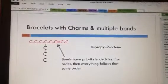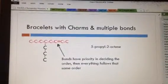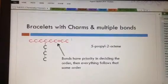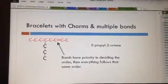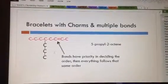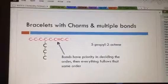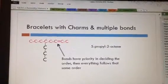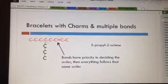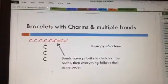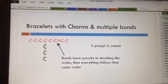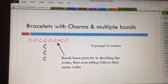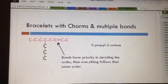By calling that a 2-octene we've established the numbering goes from right to left and therefore this charm of three carbons, which is called propyl, is off of the 1, 2, 3, 4, 5th carbon. So once you have set the numbering based on the double bonds or triple bonds, that sets the priority and everything follows that same order.